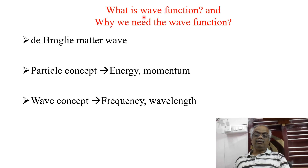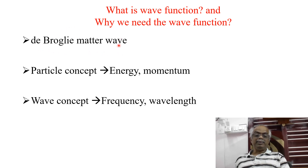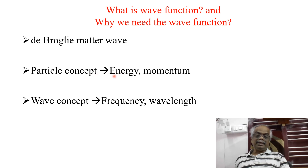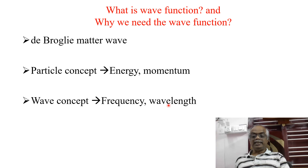We will see what is a wave function and why we need a wave function. It is well established that waves behave like particles and particles behave like a wave — that is dual nature — and we know very well about the de Broglie matter wave. If it is a particle, it is associated with mass, size, energy, and momentum. Of course, mass into velocity is momentum. And a wave has these two properties: frequency and wavelength. So, we will describe both the particle and wave in the form of a function called the wave function.